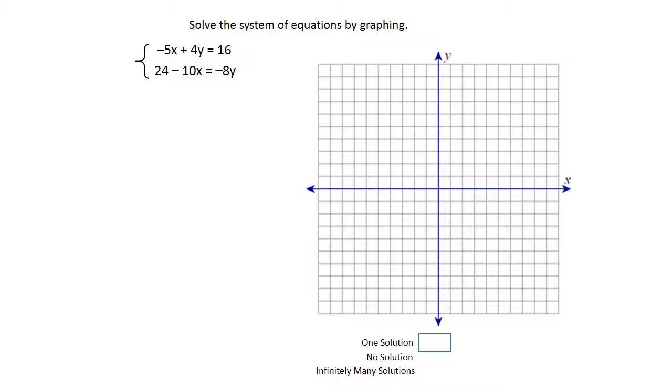So just like you would any other system, go ahead and take that first line, write it down, and solve for y. You're looking at the equal sign, realizing that you have to move that negative 5x by adding it, and when you do, you're going to have 4y equals 5x plus 16, writing the x first and the 16 second.